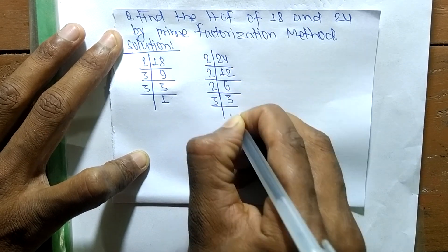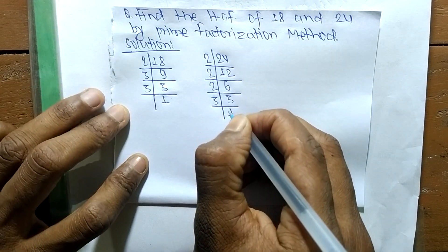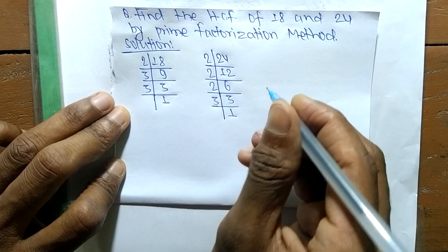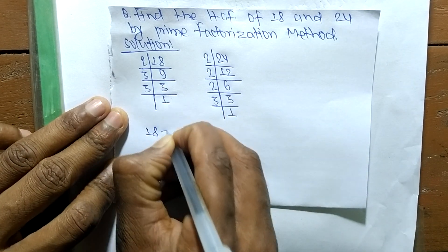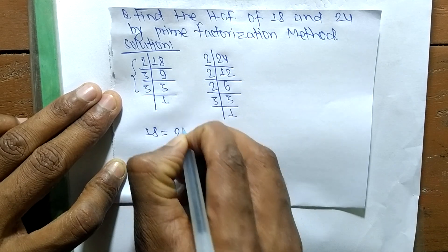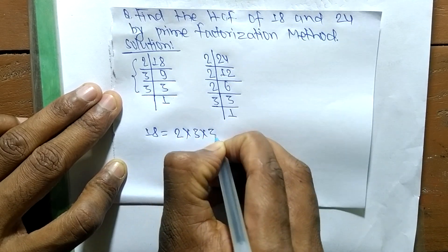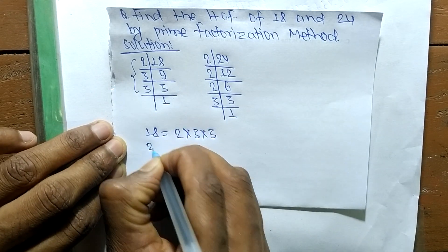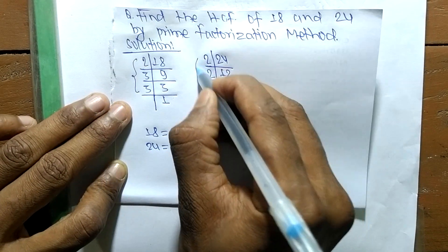Now from these prime factors, we can write 18 is equal to 2 times 3 times 3. Likewise, 24 is equal to 2 times 2 times 2 times 3.